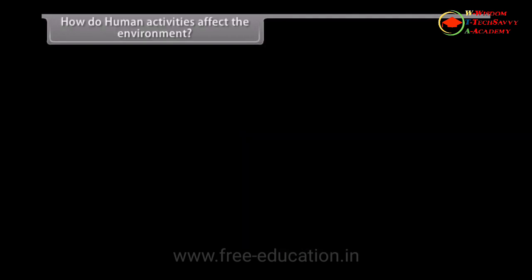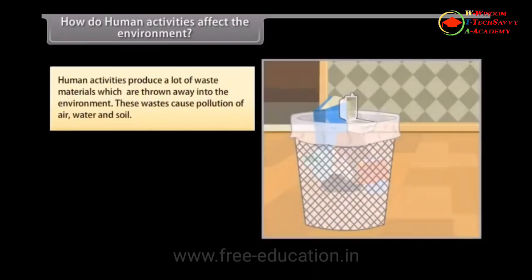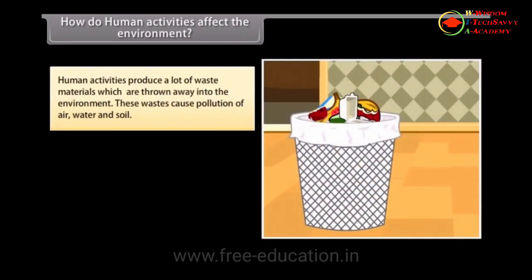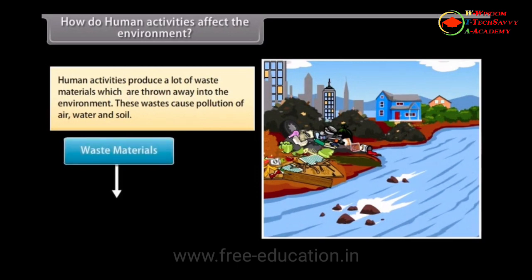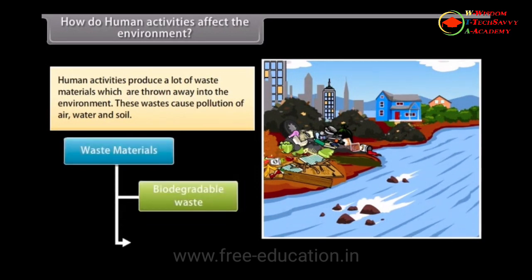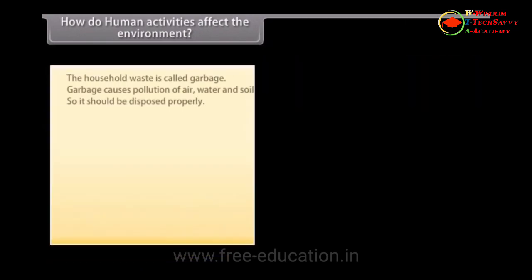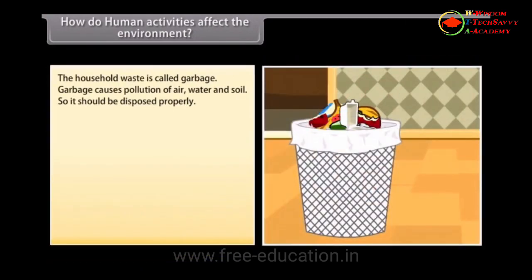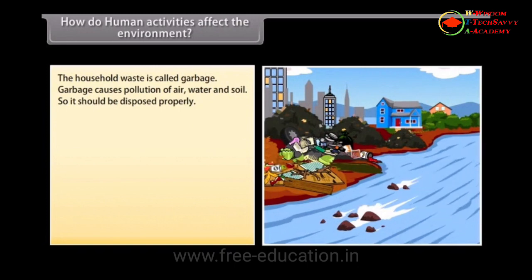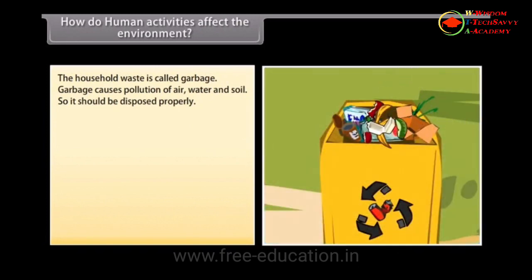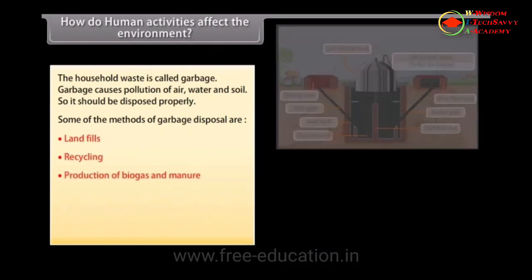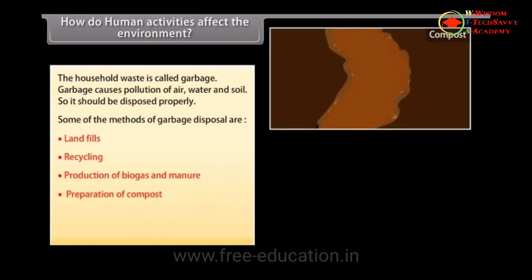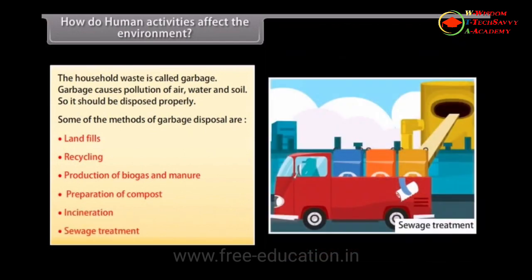How do human activities affect the environment? Human activities produce a lot of waste materials which are thrown into the environment, causing pollution of air, water and soil. The waste materials produced are of two main types: biodegradable waste and non-biodegradable waste. Household waste is called garbage, which causes pollution and should be disposed of properly. Methods of garbage disposal include landfills, recycling, production of biogas and manure, preparation of compost, incineration, and sewage treatment.